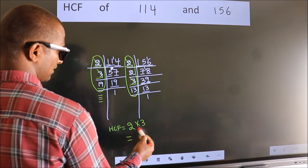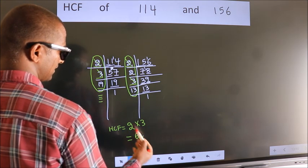So our HCF is 2 into 3, 6. 6 is our HCF.